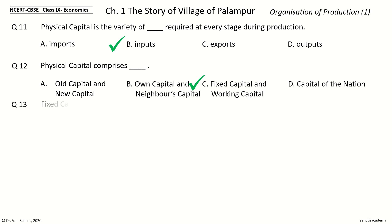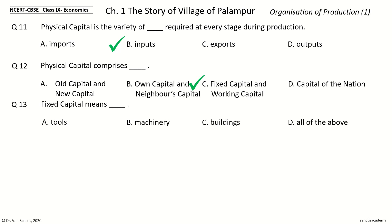Question 13: Fixed capital means dash. The options are tools, machinery, buildings, or all of the above. The answer is all of the above. So, fixed capital means tools, machinery, and buildings.